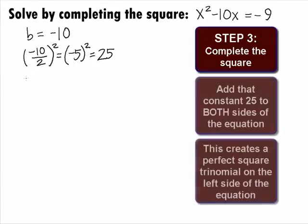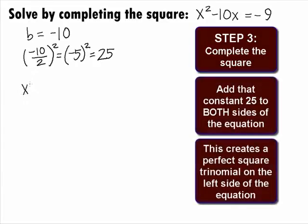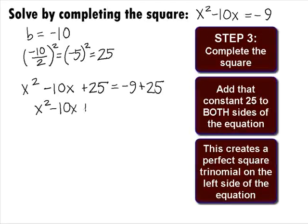Adding 25 to both sides, we get x squared minus 10x plus 25 equals a negative 9 plus 25. This will simplify to be x squared minus 10x plus 25 equals negative 9 plus 25, which gives us 16 on the right side.